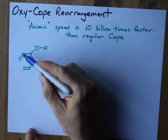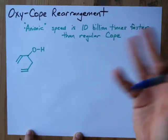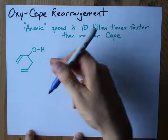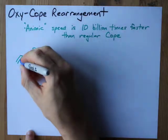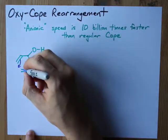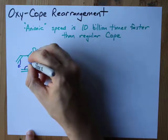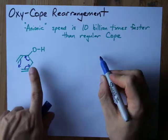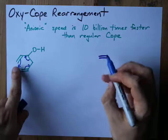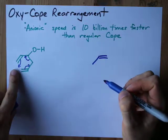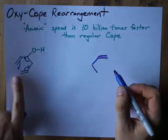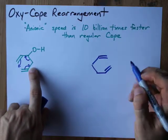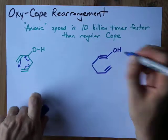Step one, you're going to have a rearrangement of the electrons. The atoms stay in the same place; it's only the distribution of electrons that's changing. I'm going to push these electrons into there, take these electrons and push them over there, take these electrons and push them up there. I'm going to end up with a double bond on top, a now single bond there, what was no bond is now a bond, what was double is now single, what was single is now double. And I have the OH still attached.